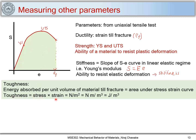Toughness can be related as stress multiplied by strain. The units of toughness will be Newton per meter squared, but we adjust this: Newton meter upon meter cube, and Newton meter is nothing but joules. It is force into displacement which gives joules. So joules per meter cube is the unit of toughness.